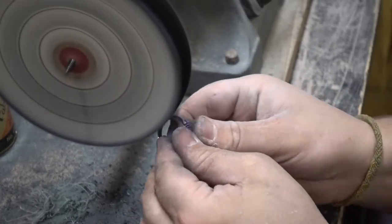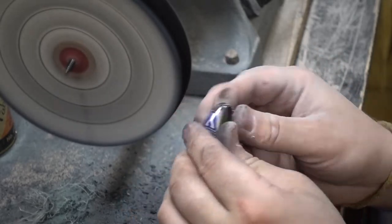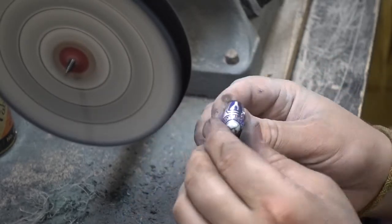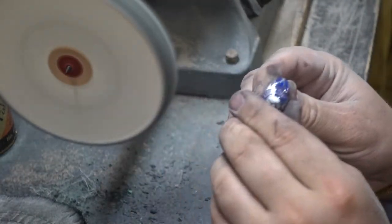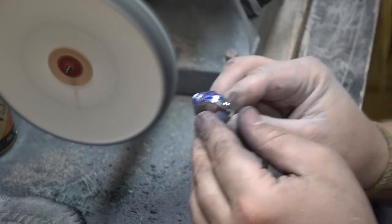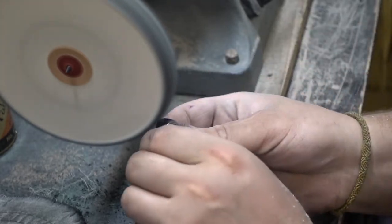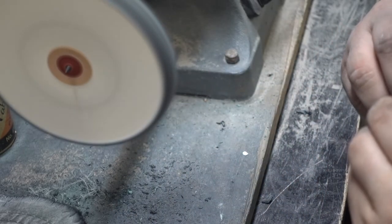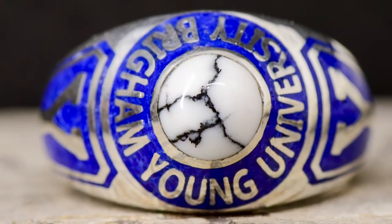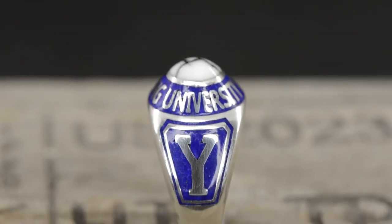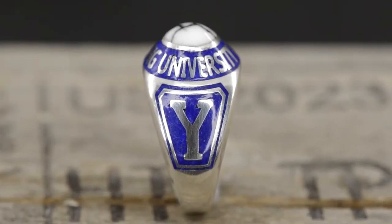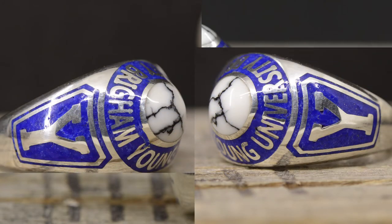You can see we're just buffing off any little minor scratches that might have been left from the sanding process and getting it all nice and clean. It's amazing how high of a polish these finer metals can take. You can see we're left with a really nice high quality class ring. Honestly, we can design any ring you'd like, whatever school you want—the quality is just amazing.